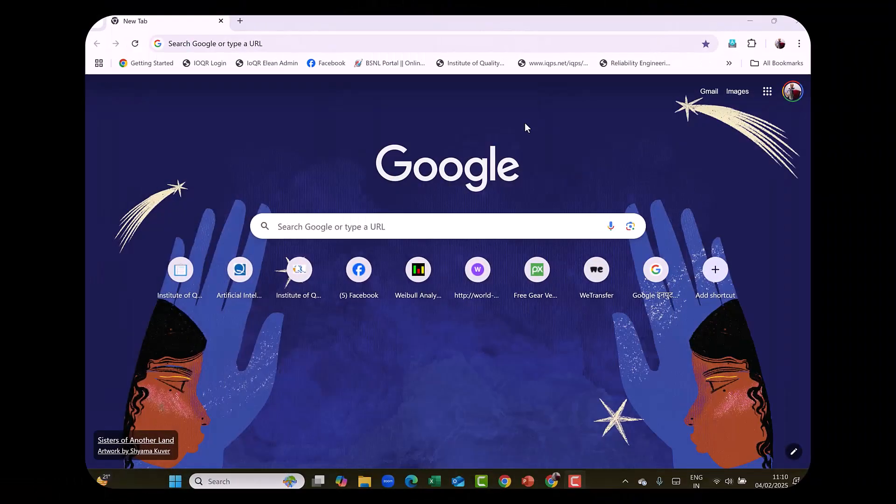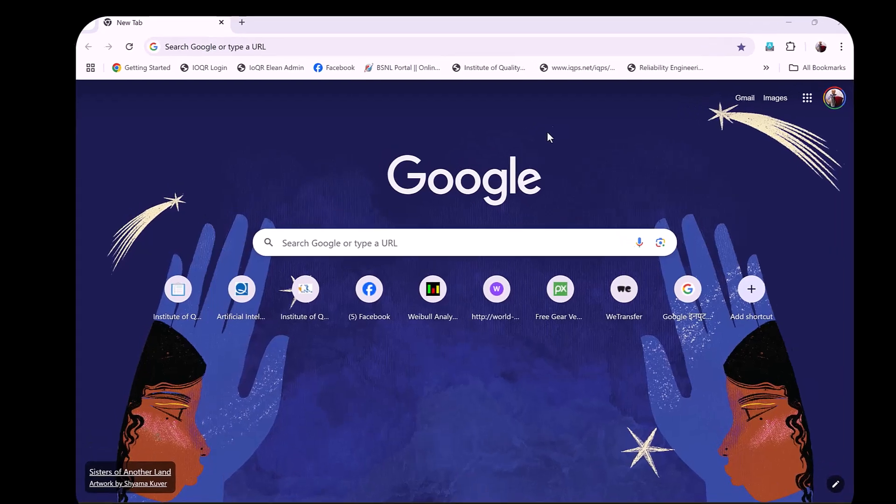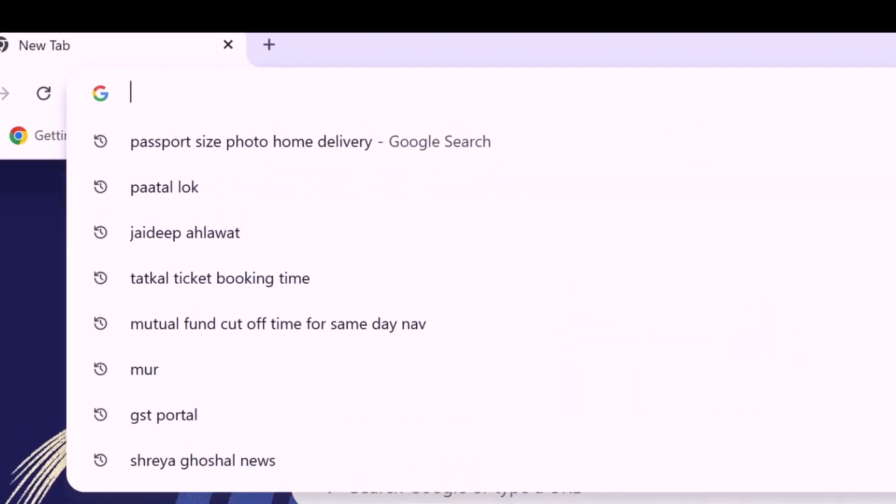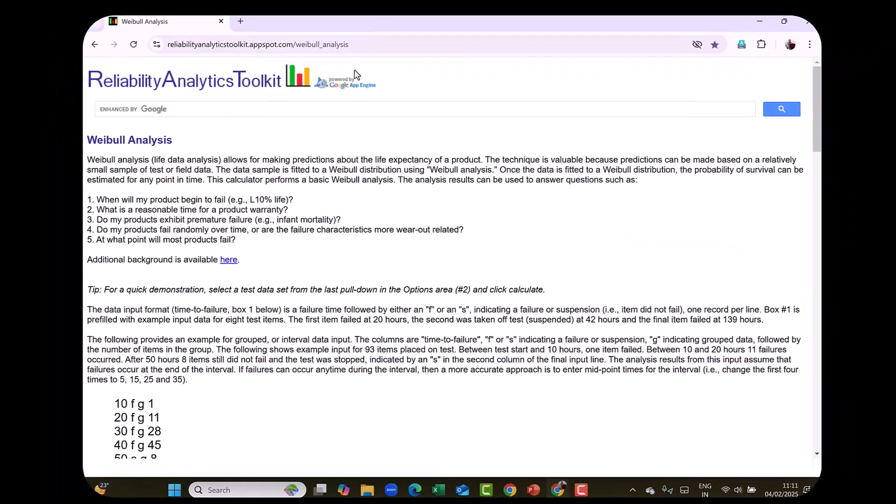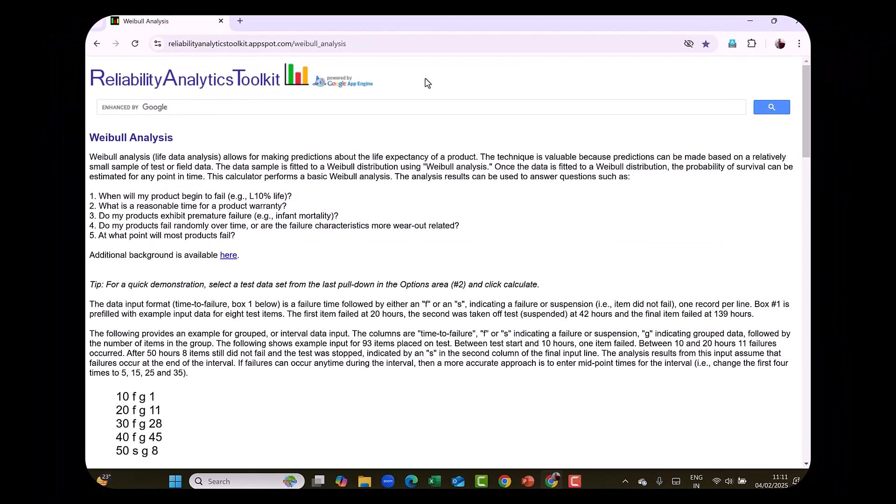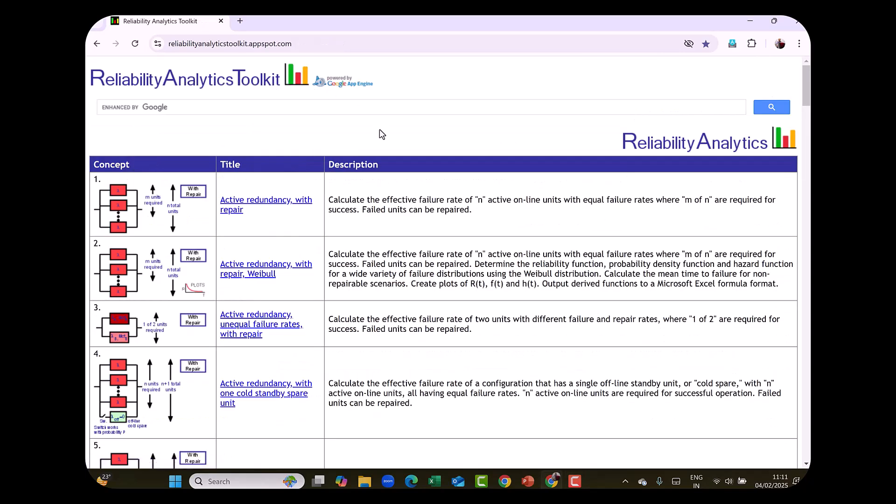To access this open source website that analyzes a lot of reliability data and provides many useful reliability tools, just type in Reliability Analytics Toolkit in Google search so that you will reach this website. So this is the Reliability Analytics Toolkit. And these are all the tools that are available and this is completely open source and free of cost.